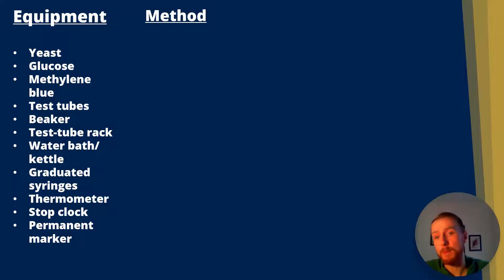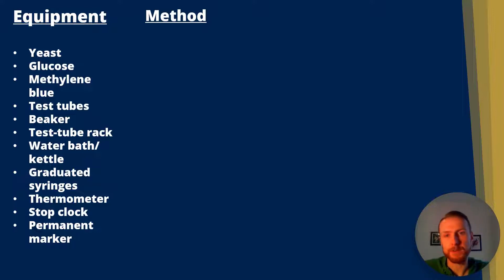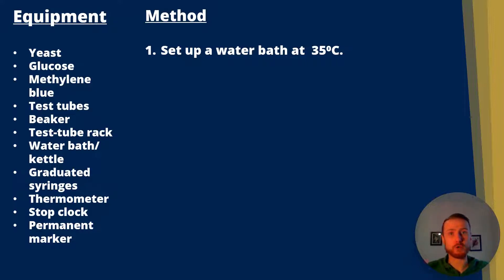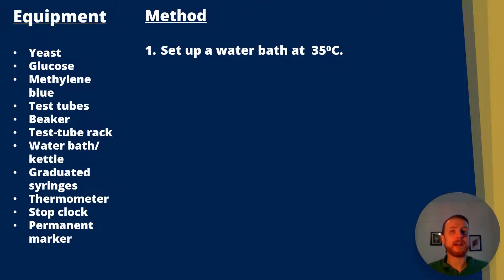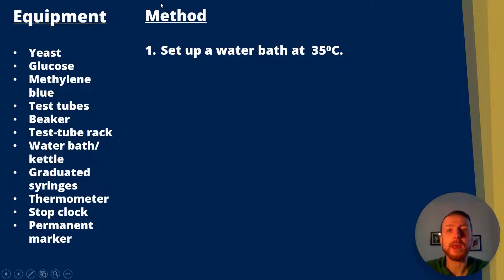On the left I've included an equipment list for Required Practical 9. For the method, step one is to set up a water bath at 35 degrees. I used a couple of large thermostatically controlled water baths — one at 35 degrees and one at 45 degrees — then used boiling water from a kettle and cold water from the tap to achieve the other temperatures, checking with a thermometer.